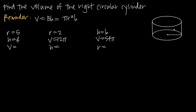When we have that particular object and we want to find its volume, we use this formula: volume is equal to b times h, where b is the area of the base and h is the height. If we think about the area of the base, we're talking about the area of a circle, so instead of b we can substitute pi r squared. We can use either formula depending on what information we've been given.